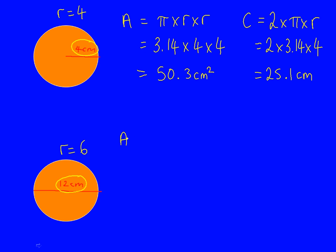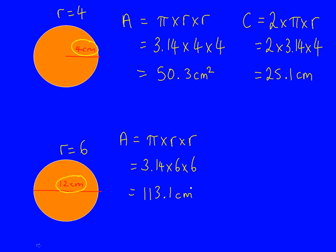If we want to find the area of this circle, we start with the formula pi times r times r. Put in the numbers: 3.14 times 6 times 6. Type that into a calculator and you'll get the answer of 113.1, remembering that we use units of centimetres squared because it's area.